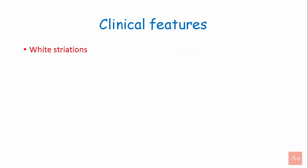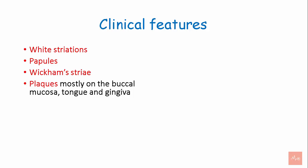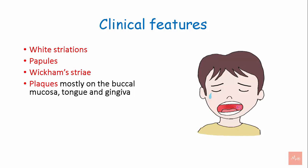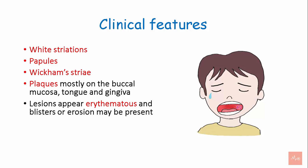Clinical features include white striations, papules, and Wickham striae — these are present on the surface and covered with characteristic very fine greyish-white lines. Plaques are mostly on the buccal mucosa, tongue, and gingiva. Lesions appear erythematous, and blisters or erosions may also be present.